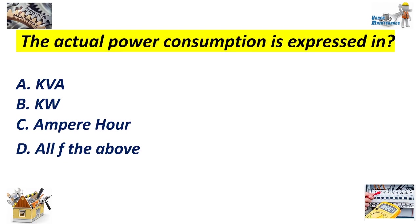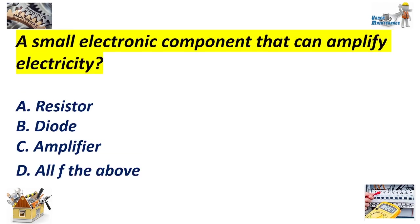The actual power consumption is expressed in: A. KVA. B. Kilowatt. C. Ampere hour. D. All of the above. Answer: B. Kilowatt. A small electronic component that can amplify electricity: A. Resistor. B. Diode. C. Amplifier. D. All of the above. Answer: C. Amplifier.